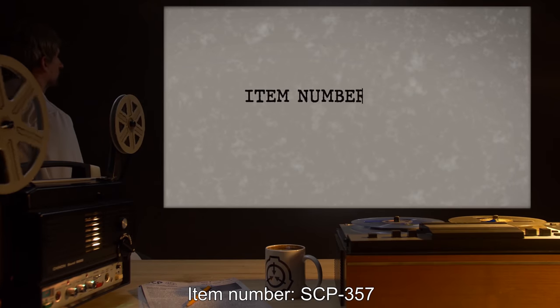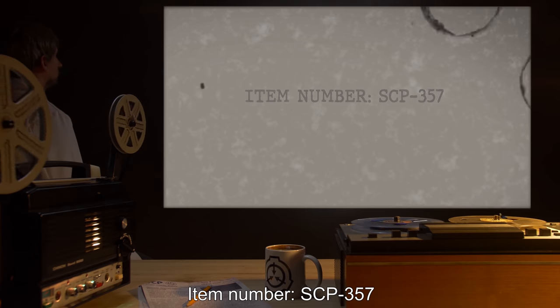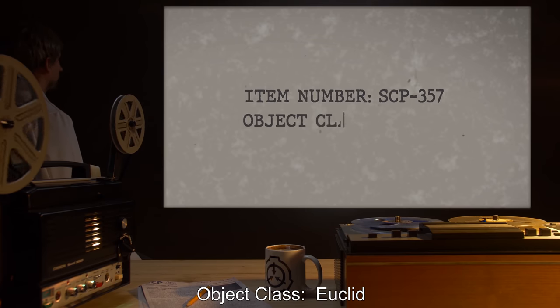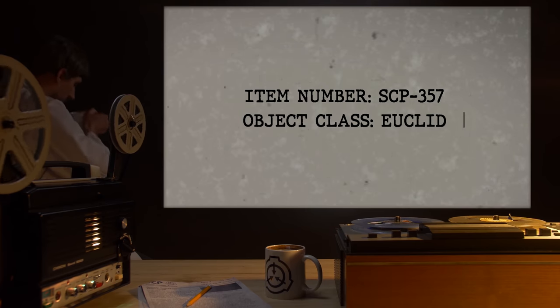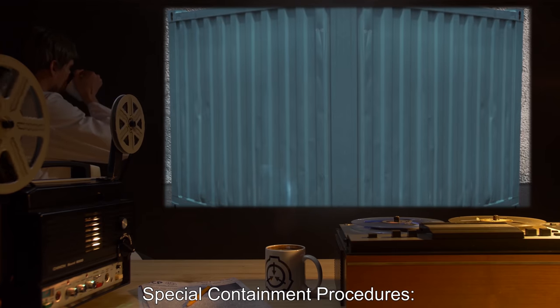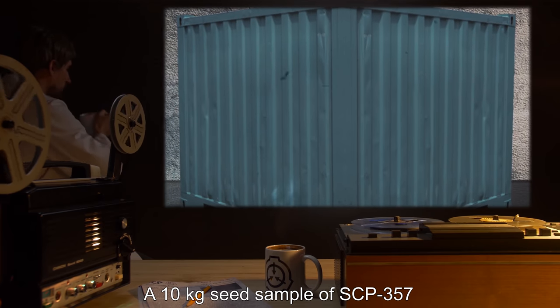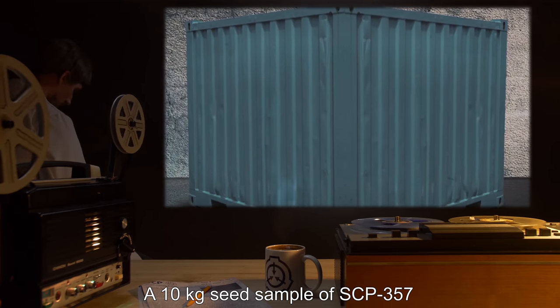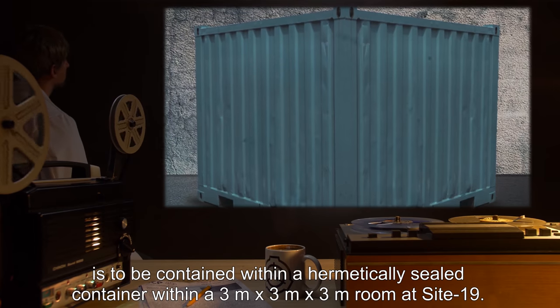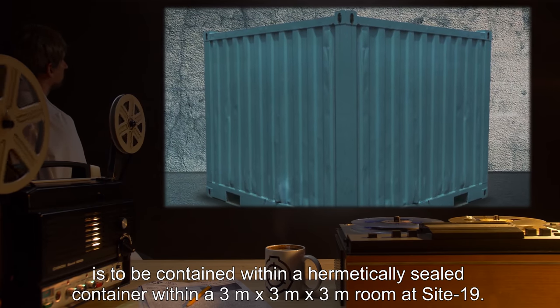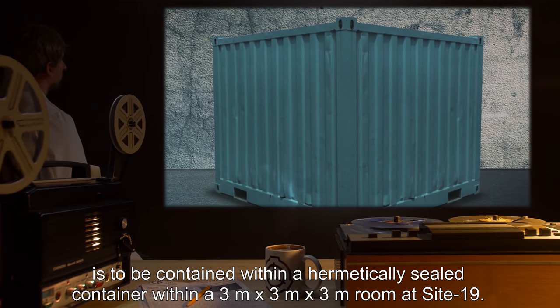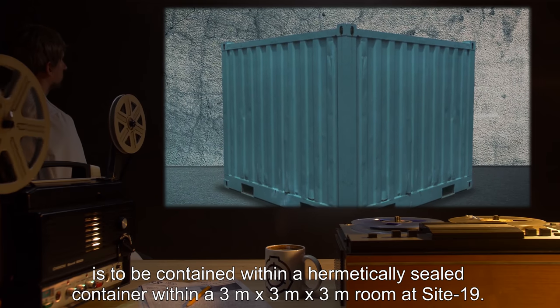Item Number SCP-357, Object Class Euclid. Special Containment Procedures: A 10kg seed sample of SCP-357 is to be contained within a hermetically sealed container within a 3m x 3m x 3m room at Site-19.